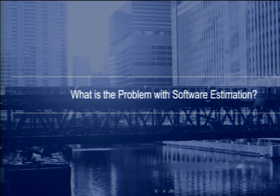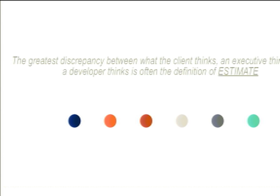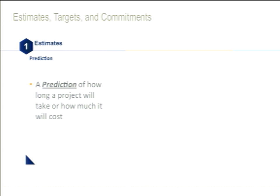What is the problem with software estimation? The first issue is the discrepancy between what different people think 'estimate' means. When a developer, a salesperson, a client, or an executive says 'estimate,' they're probably all talking about different things. Estimates, targets, and commitments are entirely different terms and concepts. An estimate is a prediction of how long something is going to take — not what it's going to cost or what you want it to cost.